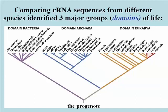One can even infer a reasonable base sequence for the small ribosomal RNA subunit for each of the ancestral species, including the progenote down at the bottom.